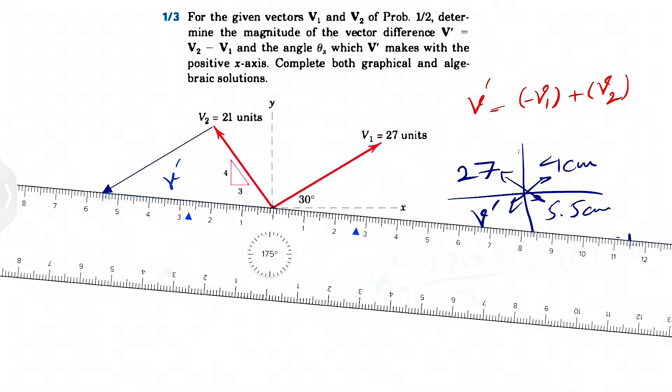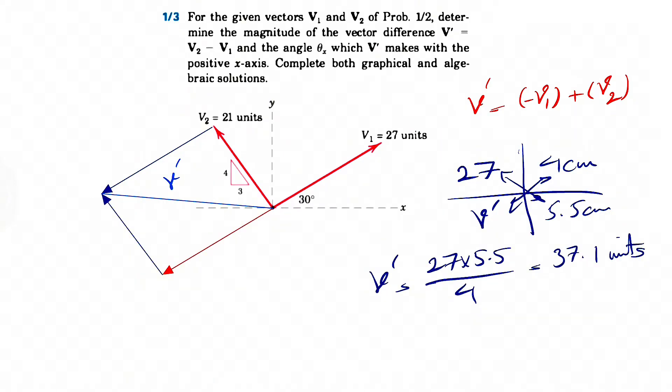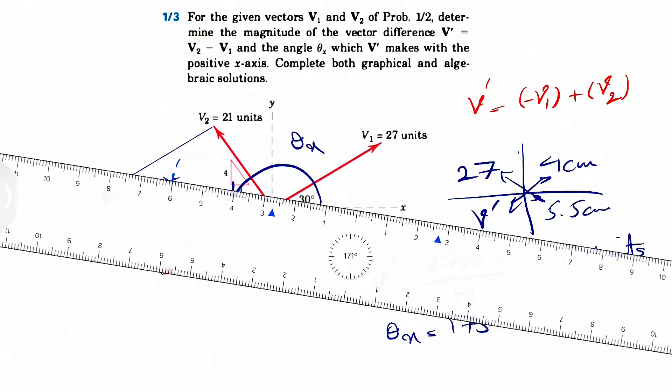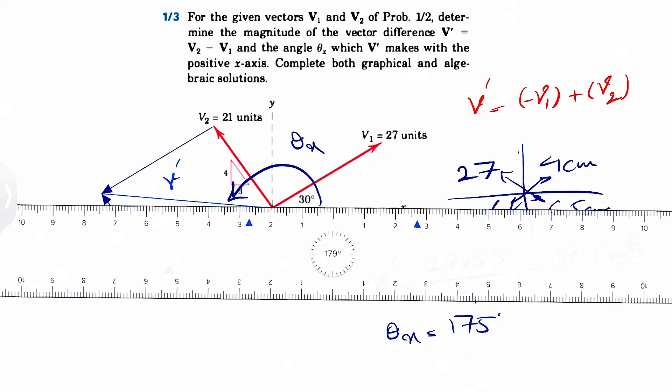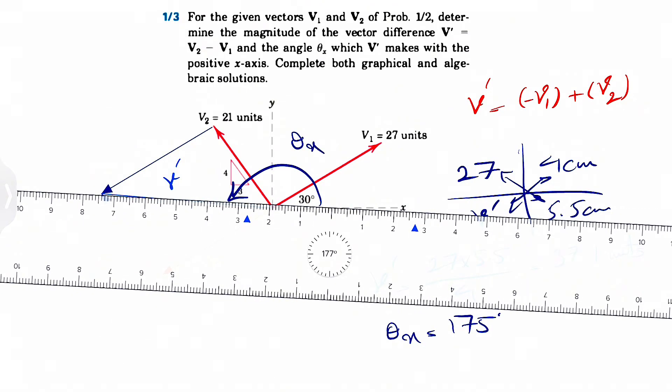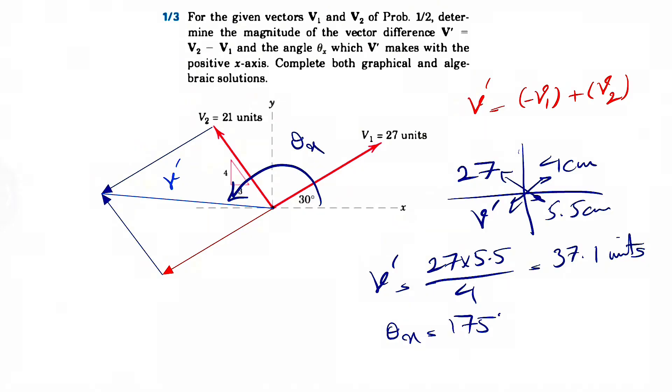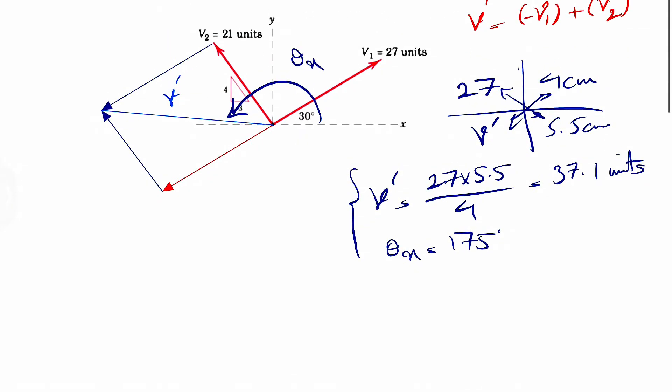So we can see that the angle that it makes is around 175. If we look at the center of this ruler, this is going to give us the theta x, which is this angle around 175. Let's just look at it one more time. So if this is our horizontal line of x, we are going like five degrees above, which is the 175. Okay, that's our graphical method.